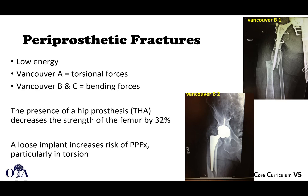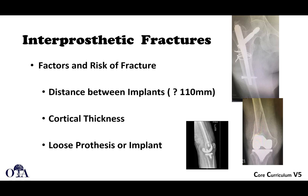Periprosthetic fractures can often happen from low-energy injuries. In the Vancouver classification, torsional forces at the end of a stem can cause a periprosthetic fracture. The presence of a hip prosthesis itself can decrease the strength of the femur by 32%, and a loose implant can increase the risk of periprosthetic fracture. For fractures in between two prosthetics such as a total hip and a total knee, the risk goes up depending on how close they are, so you want to distance them as much as possible. It also depends on cortical thickness and whether the implant is loose.